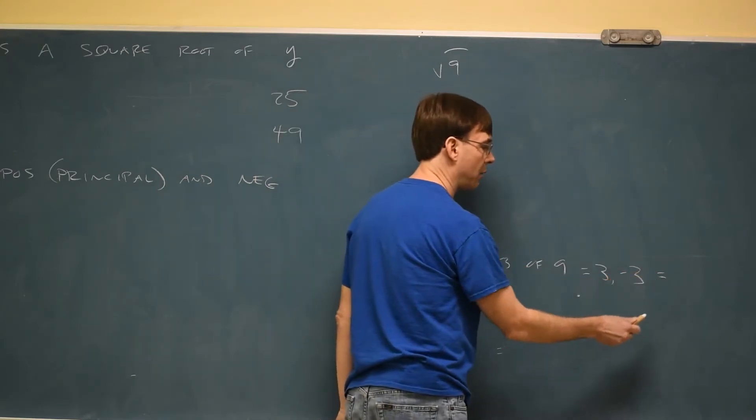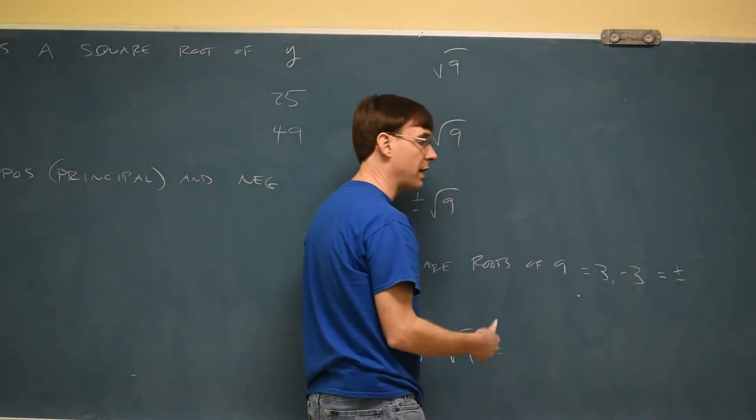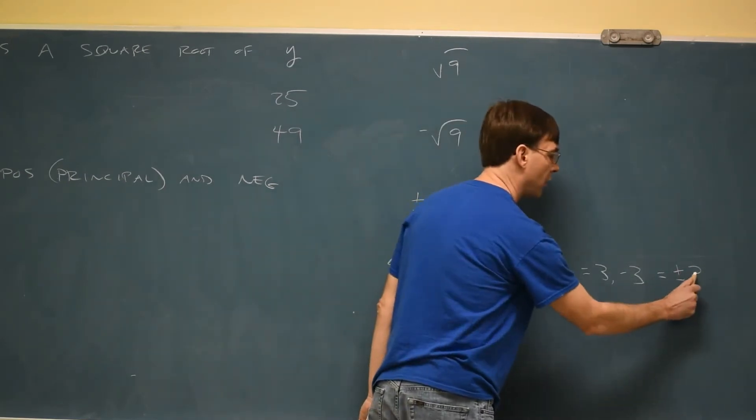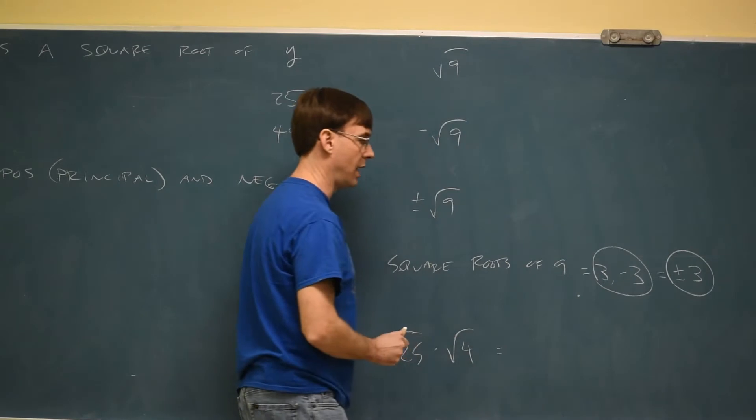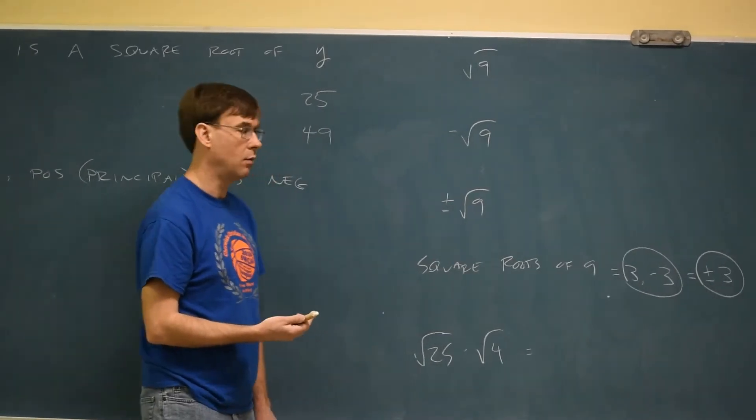If you want to write that with an interesting math symbol, you can put this symbol, meaning positive or negative, 3. This describes two answers. Whichever way you want to write it, I'm good either way.